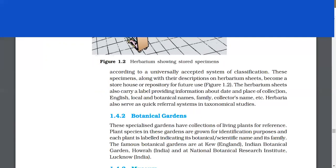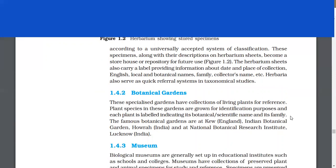Botanical gardens. These specialized gardens have collections of living plants for reference. Plant species in these gardens are grown for identification purposes and each plant is labeled indicating its botanical or scientific name and its family. The famous gardens are at Kew, England, Indian Botanical Garden, Howrah, and National Botanical Research Institute, Lucknow.